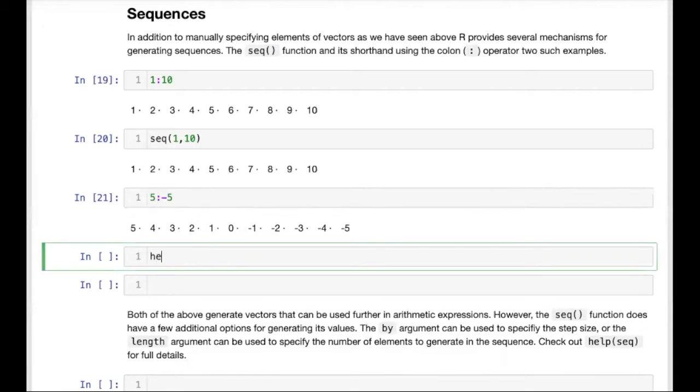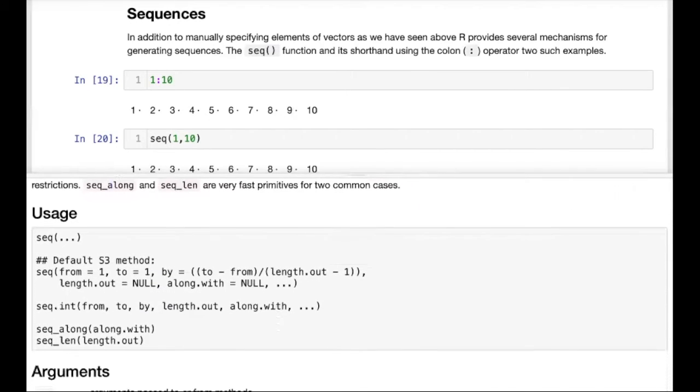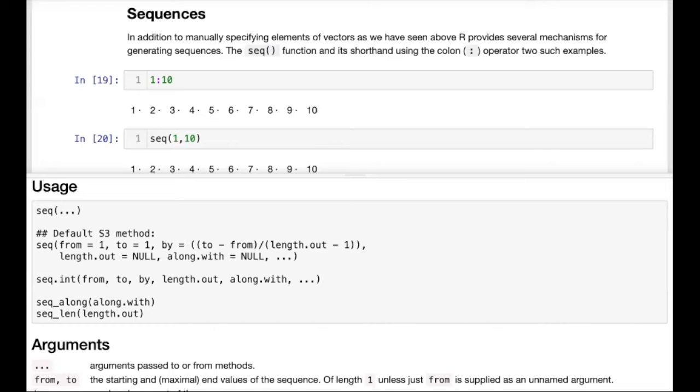If we open the help page for sequence, we see that there are actually a few arguments that we can pass to modify the behavior of the function. The first two are from and to, which we've already used positionally to specify the starting and ending values, 1 and 10.